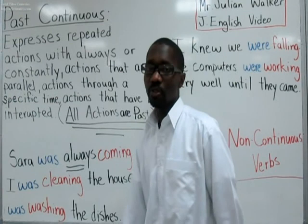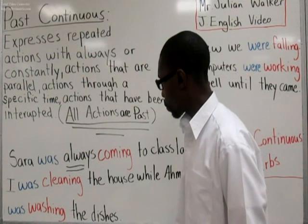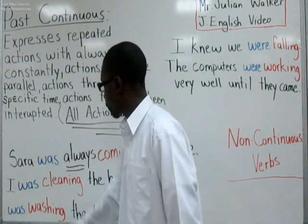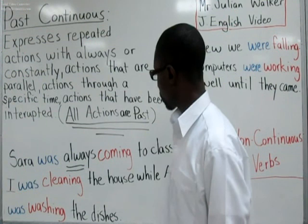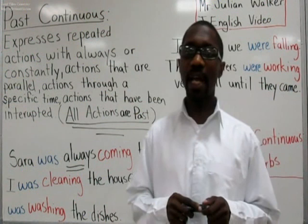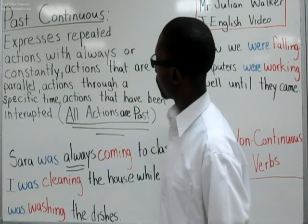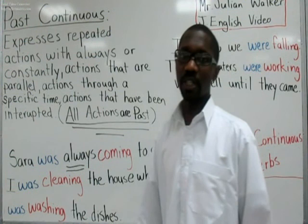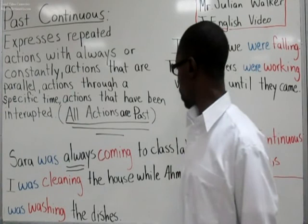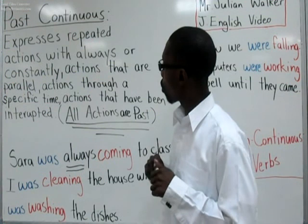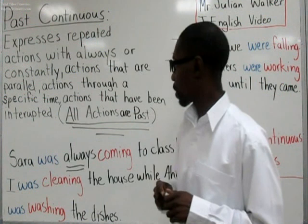Let's look at the first sentence: Sarah was always coming to class late. We have the B form of the verb was, which is in the past tense. The base form of coming is come, then you add ing. You can use always or constantly — Sarah was constantly coming to class late — it has the same meaning. So we can use always or constantly.